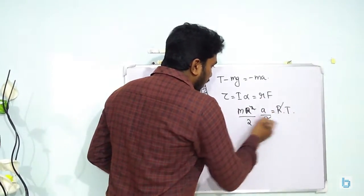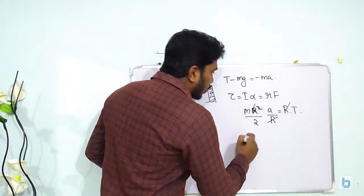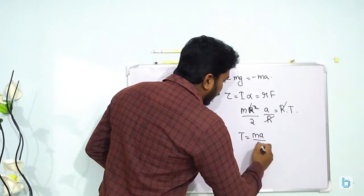One R and R gets cancelled out. This R and this R is also getting cancelled out. So we have tension is equal to MA by 2.